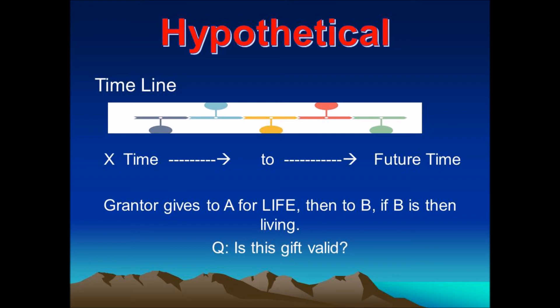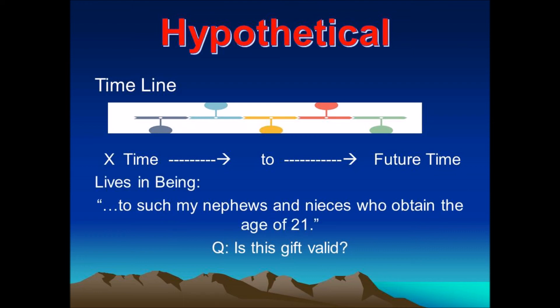Lives in being is another concept under the Rule Against Perpetuities. The law allows any lives to be used to show the validity or invalidity of an interest, but no lives are helpful unless somehow connected with the vesting of an interest. The measuring lives need not be given a beneficial interest in the property and need not be expressly referred to in the instrument, but there must be some connection ensuring vesting or failure within the perpetuity period. Consider this example from a testator's will: 'To such of my nephews and nieces as attain the age of 21.' At the time of the testator's death, she has two brothers and six nephews and nieces, all under age 21. Is the gift valid?